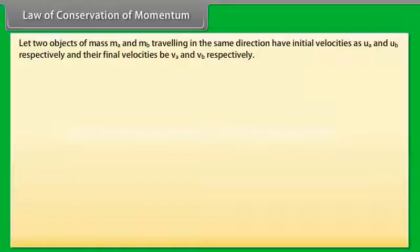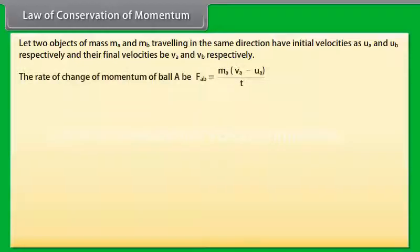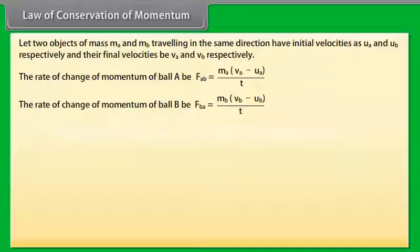Let two objects of mass ma and mb traveling in the same direction have initial velocities as ua and ub respectively, and their final velocities be va and vb respectively. The rate of change of momentum of ball A, Fab, equals ma × (va - ua) / t. The rate of change of momentum of ball B, Fba, equals mb × (vb - ub) / t.